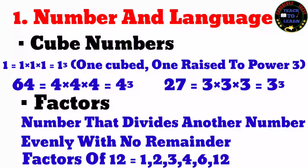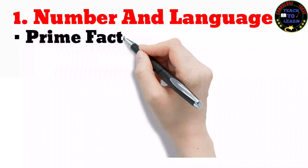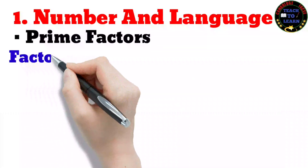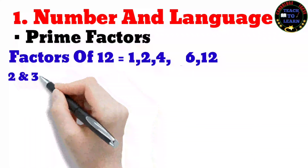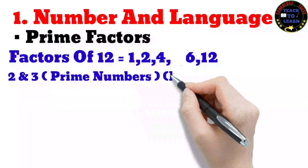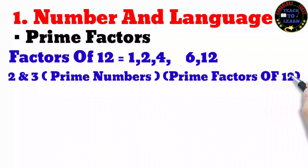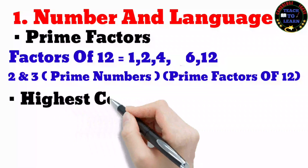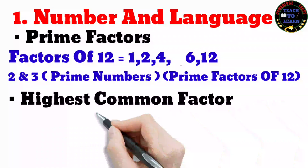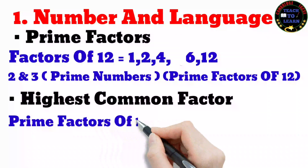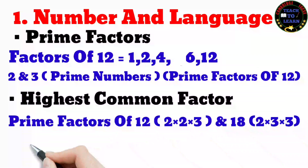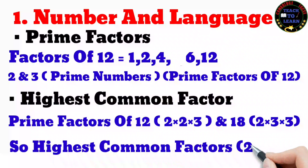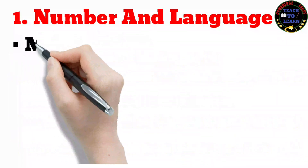Factors are numbers that divide another number evenly with no remainder. The factors of 12 are 1, 2, 4, 6, and 12; out of these, 2 and 3 are prime numbers, so these are the prime factors of 12. Highest common factor (HCF): the prime factors of 12 are 2 × 2 × 3, and the prime factors of 18 are 2 × 3 × 3, so the HCF is 2 × 3 = 6.